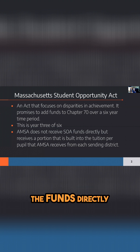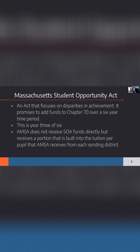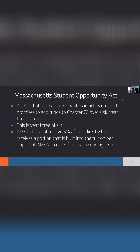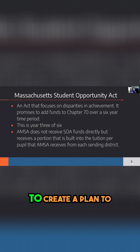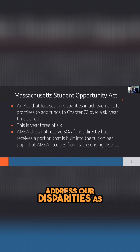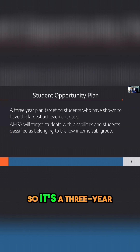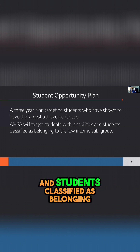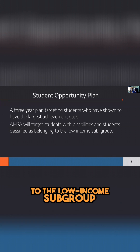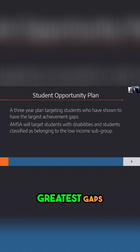AMSA doesn't receive the funds directly. Liana, at one point in time, tried to find out what our Student Opportunity Act funds were in order to gauge what our investment should be in it, but it is built into the tuition number. So we're still required to create a plan to address our disparities as the state sees them — a three-year plan targeting students with the achievement gaps. AMSA is going to focus on targeting students with disabilities and students classified as belonging to the low-income subgroup, because that is where we see our greatest gaps.